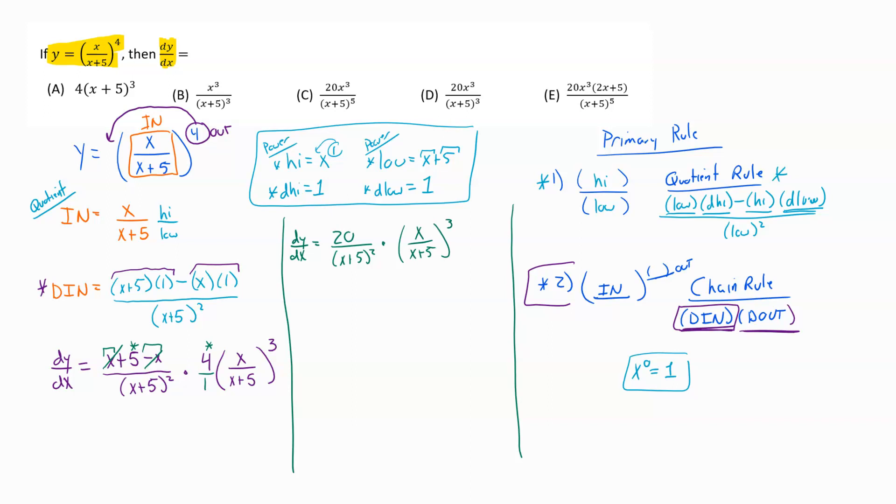And then I've got on bottom x plus 5 squared times this x over x plus 5 to the third. The next move is just a laws of exponents game. When you have a bunch of stuff raised to a power, you distribute that power into every chunk. So as we distribute that through, we would get 20 times, on the top would now be x to the third.